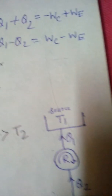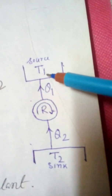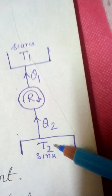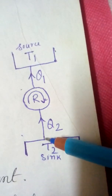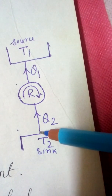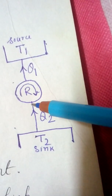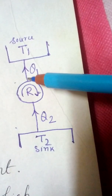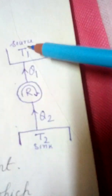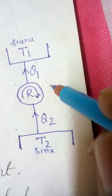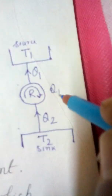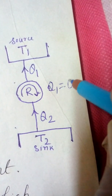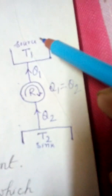What does this mean? This is the source temperature T1 and this is the sink temperature T2. From the lower temperature to the higher temperature, some heat Q2 is extracted and thrown to the source T1, where Q1 is equal to Q2. This system is impossible.